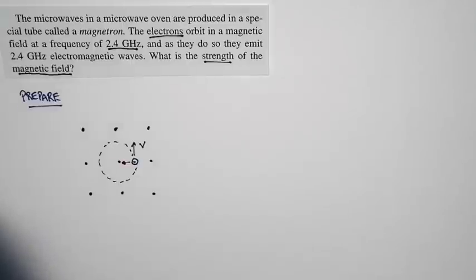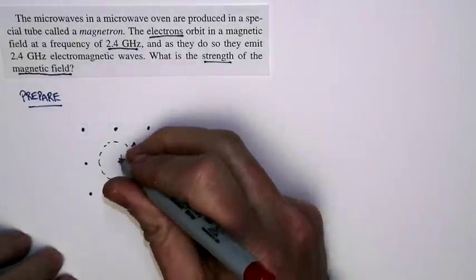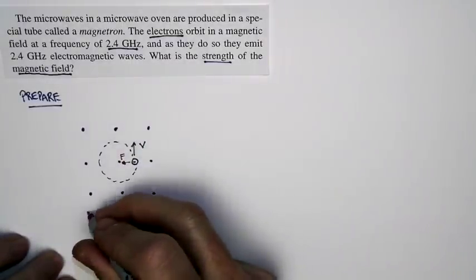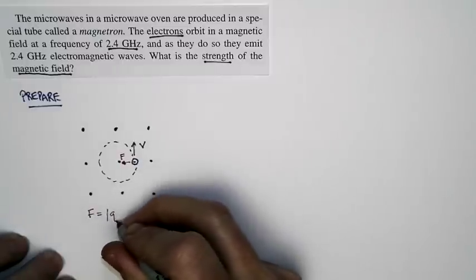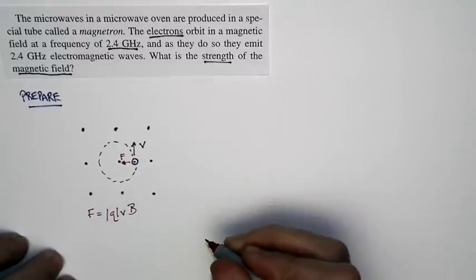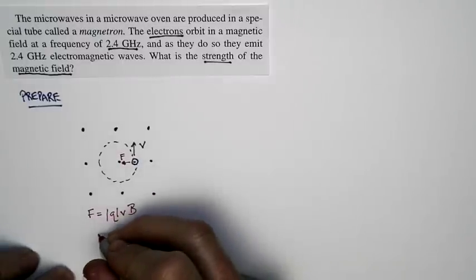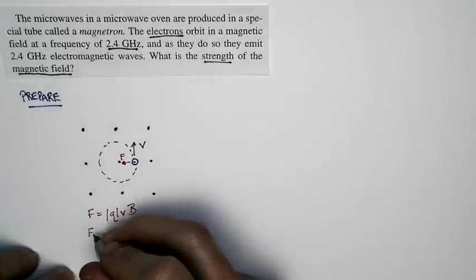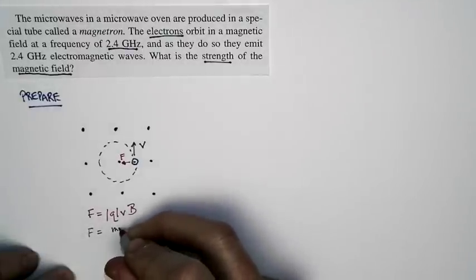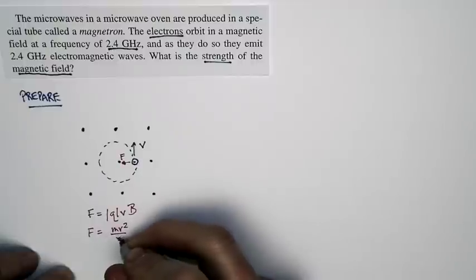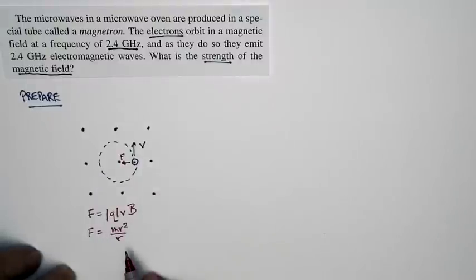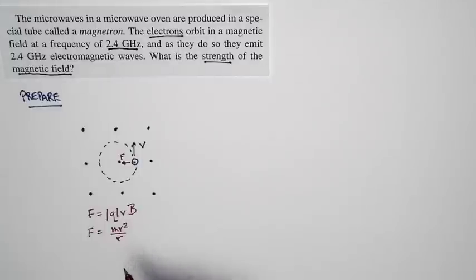And the force is produced by the magnetic field. So the force is equal to the magnitude of the charge times the speed times the strength of the magnetic field. But since it's going in a circle, it's also true that the force is just equal to m times v squared divided by r. That's from way back in chapter six. That's the force for any object moving in a circular orbit.